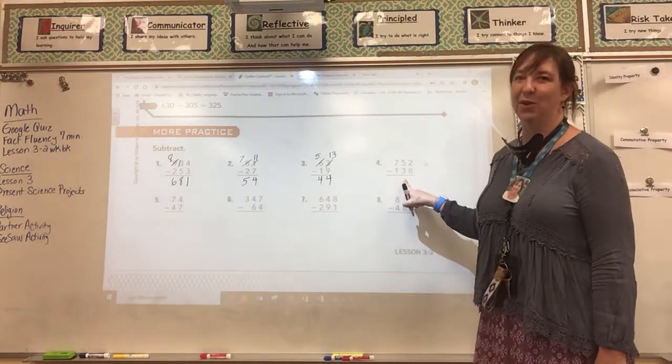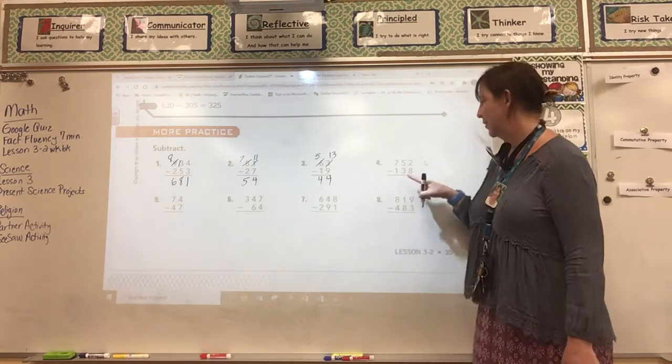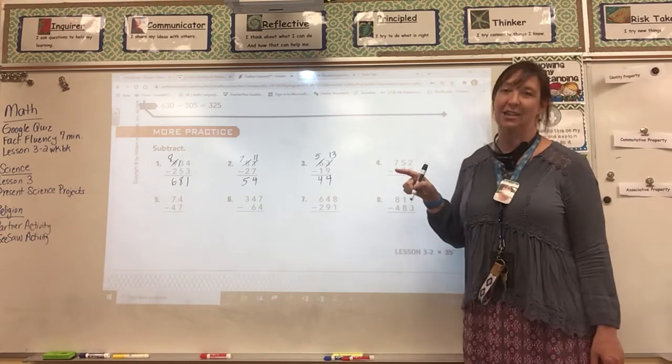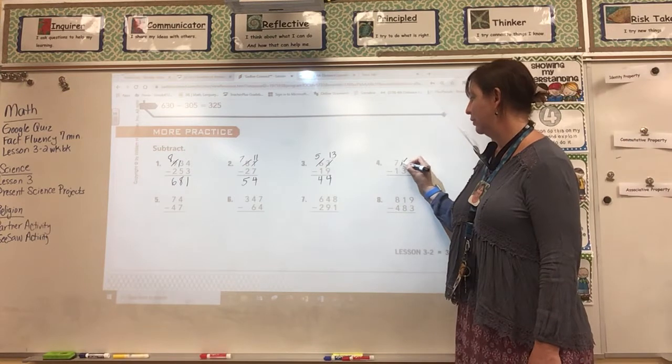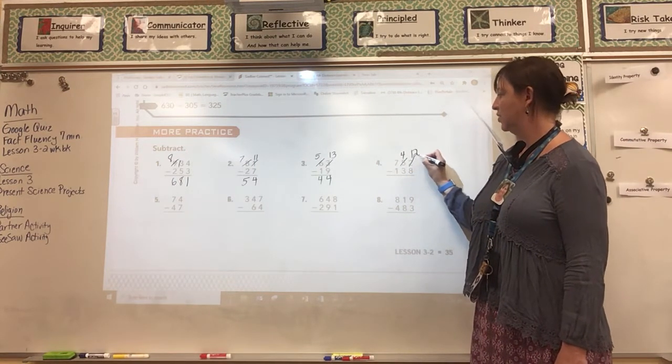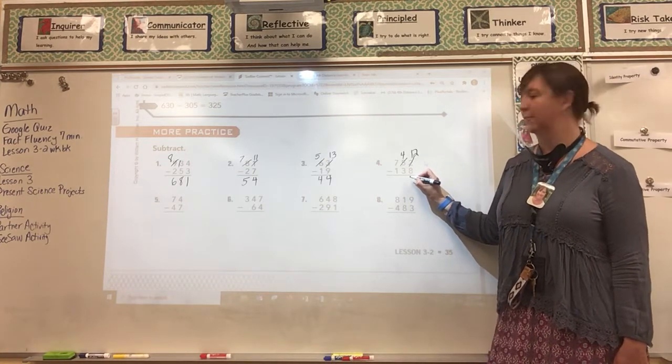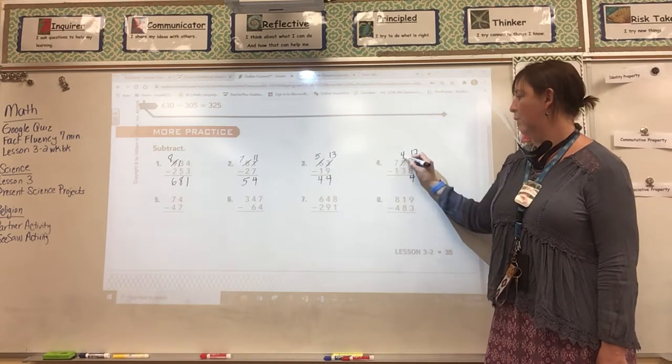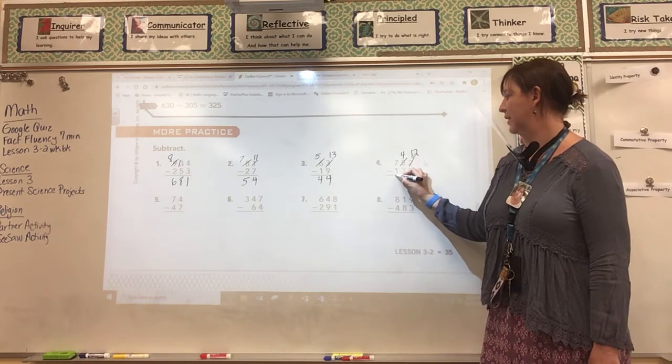Let's take a look at number 4. Again, I have to regroup. 8 minus 2 I can't do. I have to borrow from my tens place and regroup. This becomes a 4. This becomes 12. 12 minus 8 is 4. 4 minus 3 is 1. And 7 minus 1 is 6.